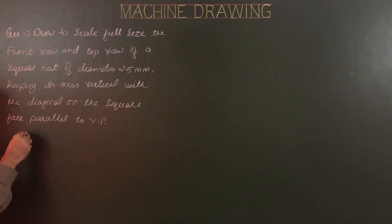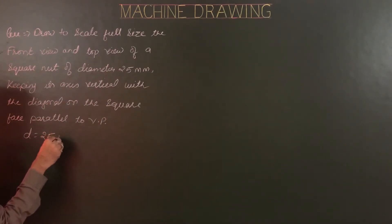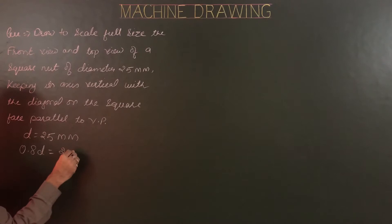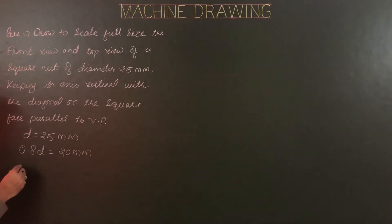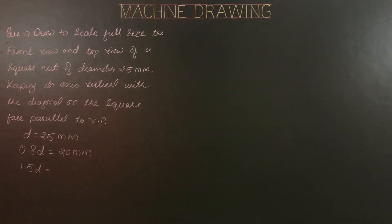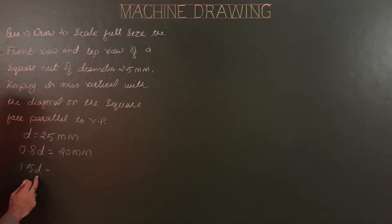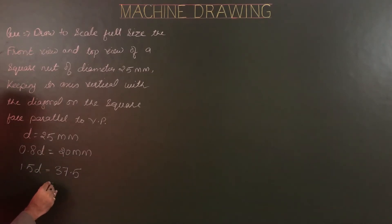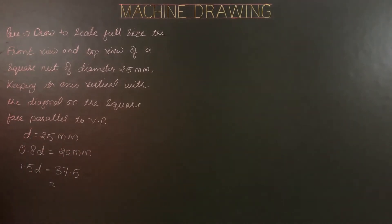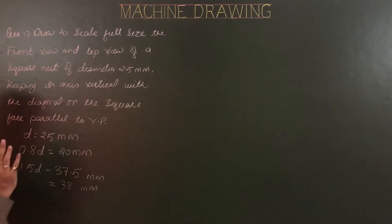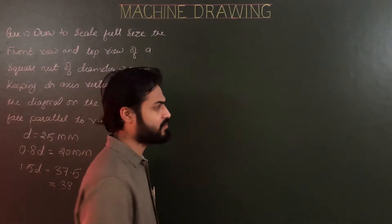For construction, first calculate all standard dimensions for 25 mm. Diameter D is 25 mm. 0.8 of D equals 20 mm. 1.5 of D is the diameter of the chamfering circle or size of the square, so 1.5 of D equals 37.5. For construction we can assume 37.5 as 38 — this is for construction only, but the calculated value is 37.5.